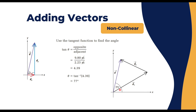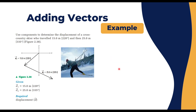The magnitude of the resultant is 10 meters at an angle of 77 degrees — that completes the first example. Now let's take another example: use components to determine the displacement of a cross-country skier who traveled 15 meters at 220 degrees and then 25 meters at 335 degrees, as shown in the figure. We start with a Cartesian coordinate system.